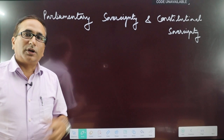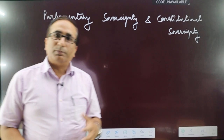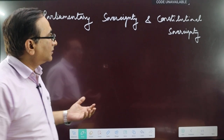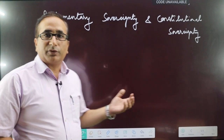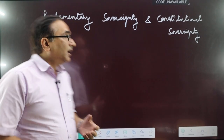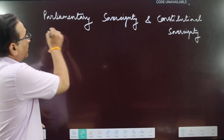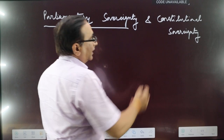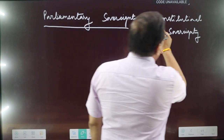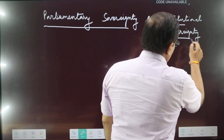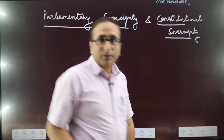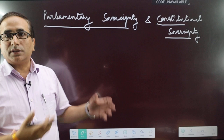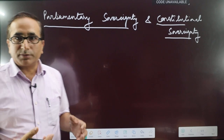We have two terminologies of political system that we have to discuss. One is parliamentary sovereignty and another is constitutional sovereignty. It is necessary to understand these two concepts.